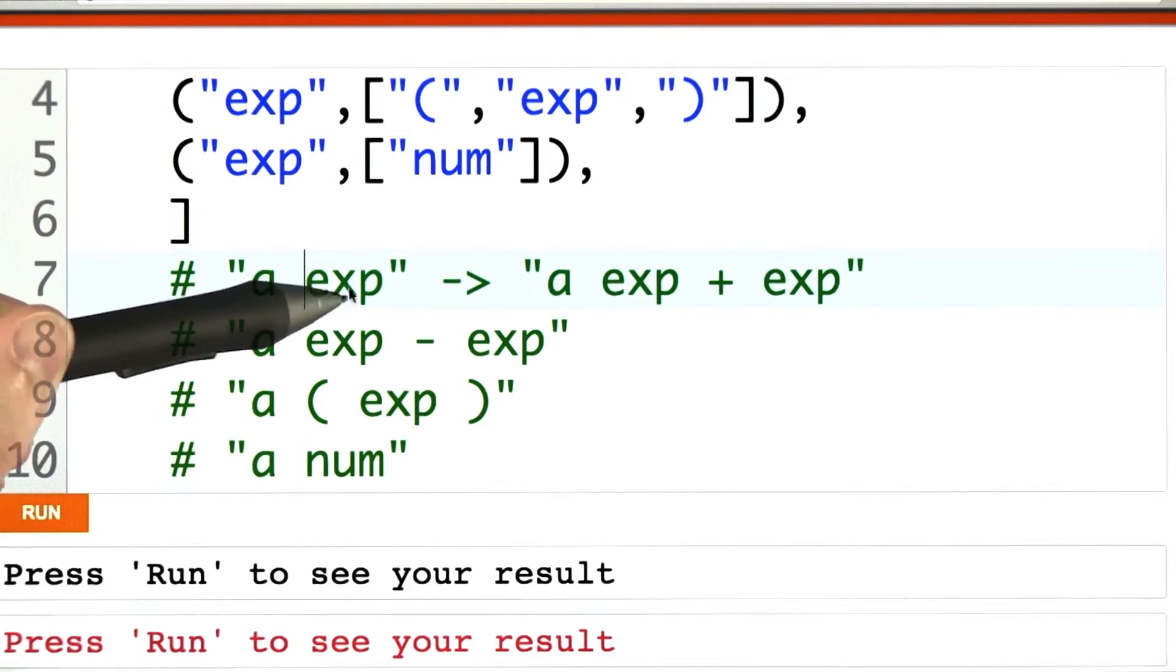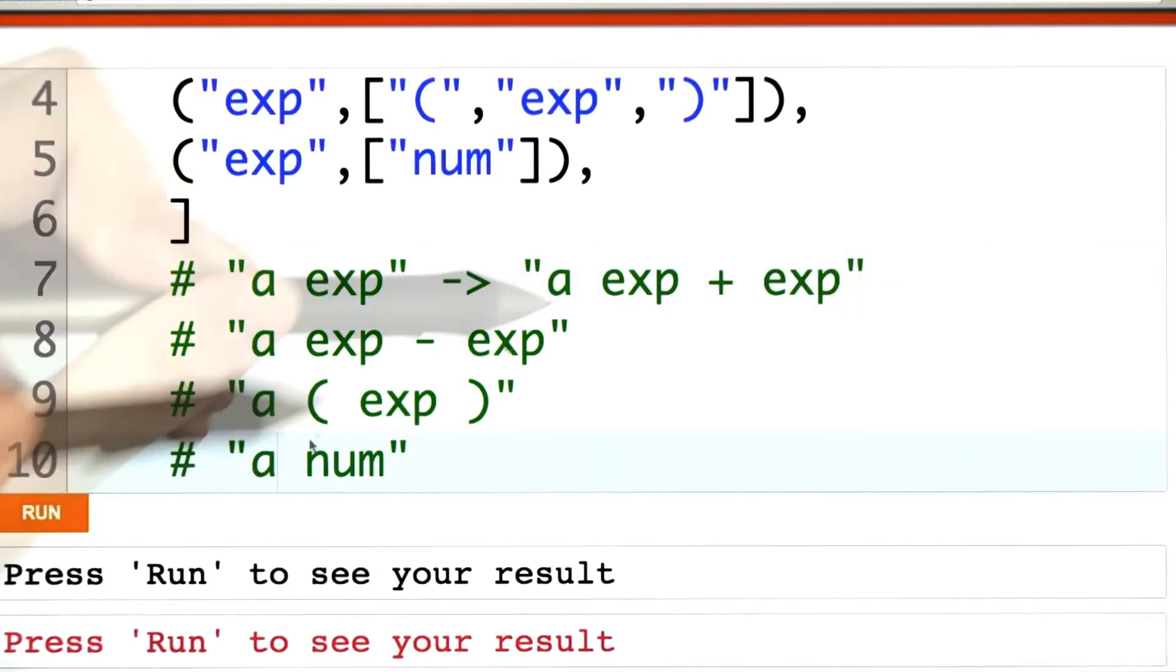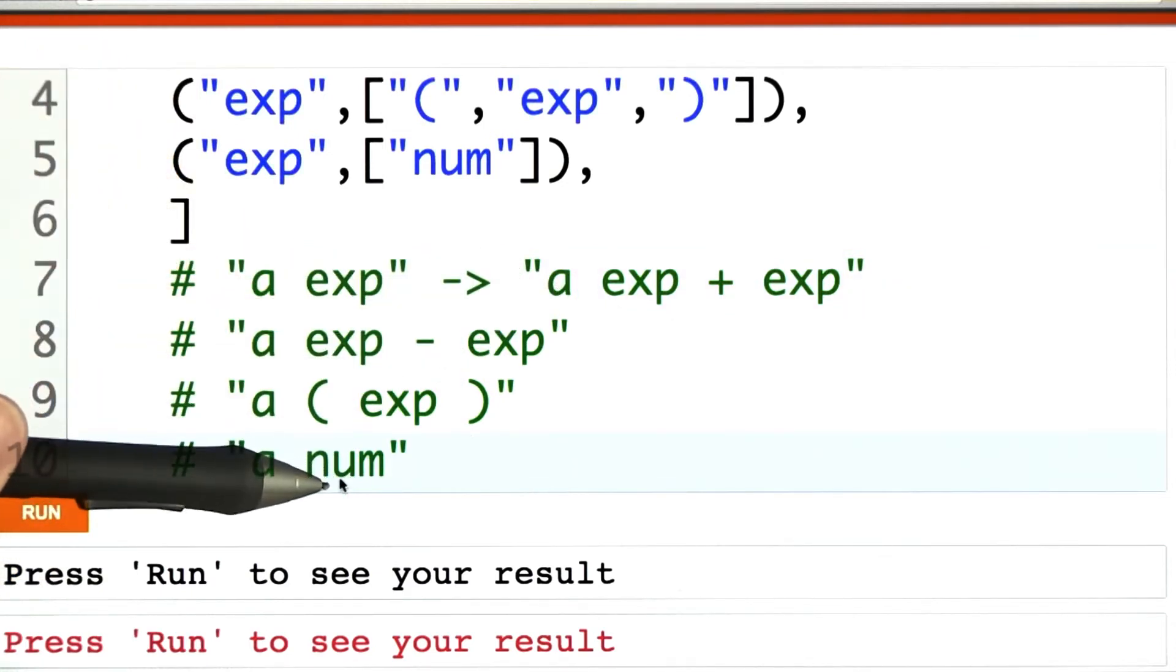For each of these possible token positions and for each grammar rule, we removed the starting token and replaced it with the right-hand side of the grammar rule. This is the way we're going to enumerate all of the valid strings in the grammar.